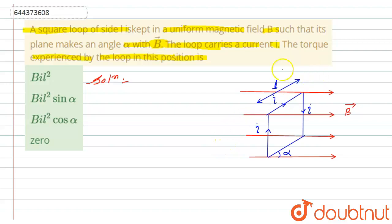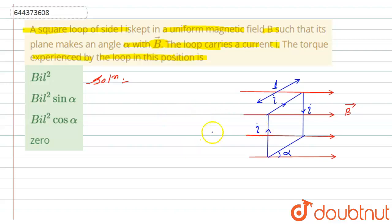According to the question, we have to find the torque experienced by the loop because of this magnetic field. To find the torque experienced by this current-carrying loop, first of all we need to find the magnetic moment for the square loop, because we know that the torque is given by: τ = M × B (magnetic moment cross magnetic field B).